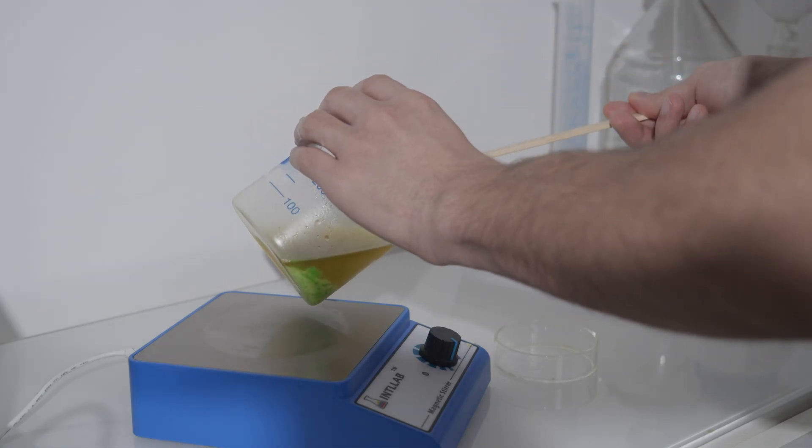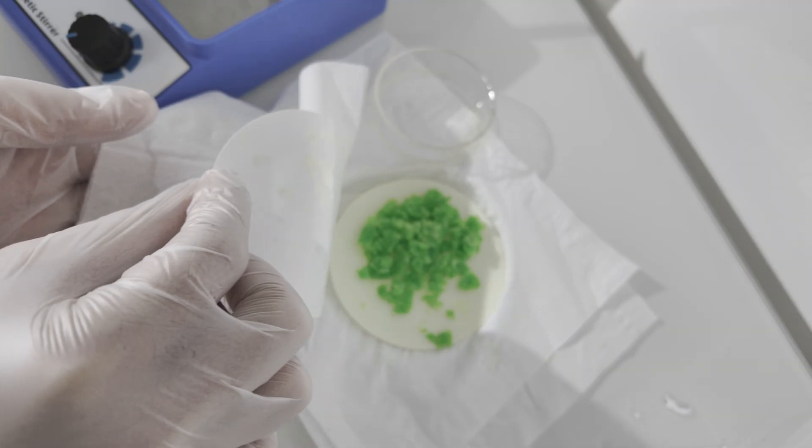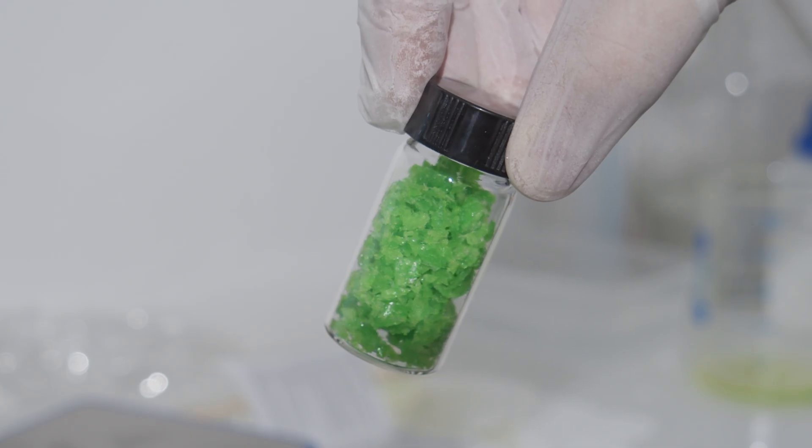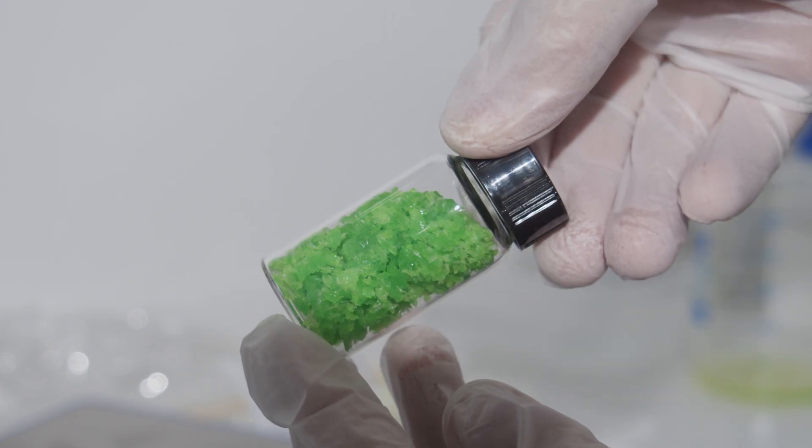And once the crystals had fully formed, I carefully decanted the remaining solution, leaving the crystals behind, then dried them gently using filter paper and transferred them into a vial for storage. The final yield was around 11 grams of pure dark green potassium ferroxalate trihydrate.